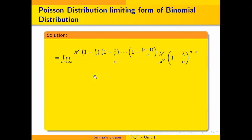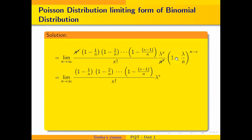After cancellation, the remaining terms give us lambda to the power x over x factorial, times 1 times (1 minus 1/n) times (1 minus 2/n) and so on. I can write 1 minus lambda over n to the power n minus x by splitting it into two terms: (1 minus lambda over n) to the power n times (1 minus lambda over n) to the power negative x.